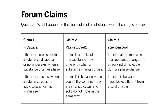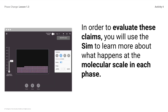These claims refer to what happens at the molecular scale during a phase change. What is happening to the molecules of a substance during a phase change? In order to evaluate these claims, you will use the SIM to learn more about what happens at the molecular scale in each phase. Record your observations about the molecular scale of each phase in the data table and consider how the movement of molecules relates to the macroscale appearance of each phase.